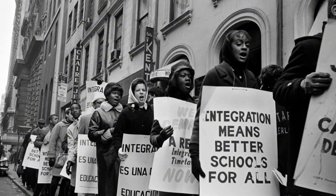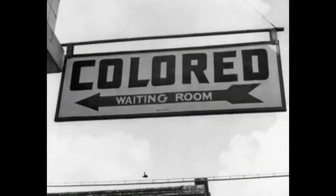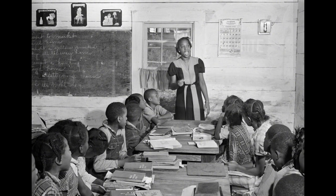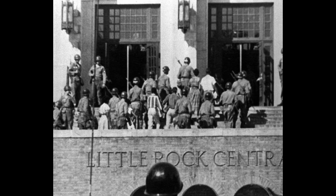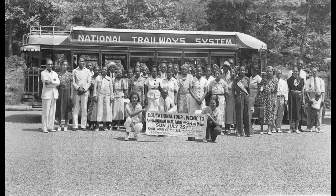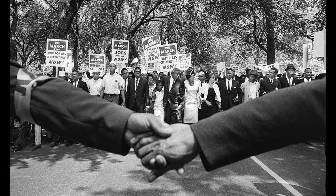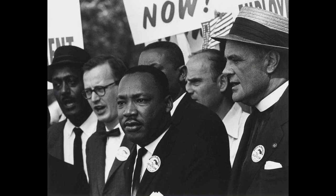The United States enforced segregation through a series of laws and policies known as the Jim Crow laws. These laws mandated racial segregation in public facilities such as schools, transportation, and housing, and denied African Americans their civil rights. Civil rights refer to the basic rights and freedoms that every individual is entitled to — it is all about protecting people from discrimination.